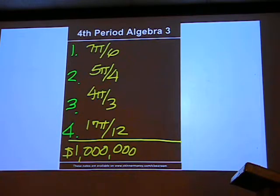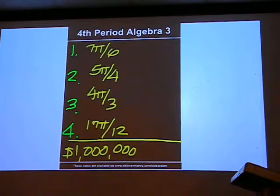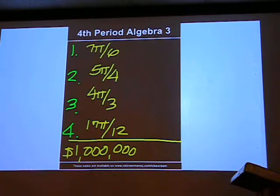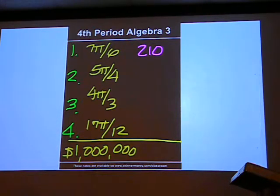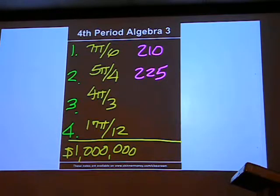The million-dollar challenge for Algebra 3, 4th period, 9/27: convert from radians to degrees. For problem number 1, you should have 210. Problem 2 is 225. Problem 3 is 240.